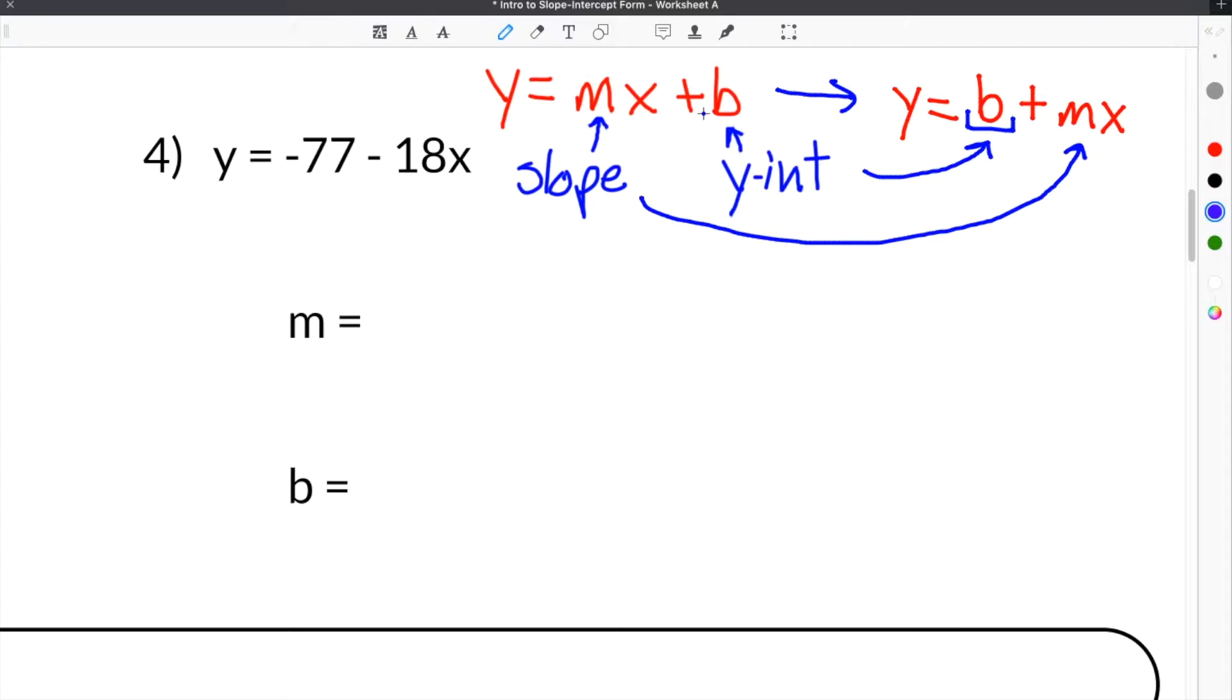So our B here will still be the Y-intercept. And then the coefficient on the X will still be the slope. So if we look back at our equation, we're given Y equals negative 77 minus 18X.